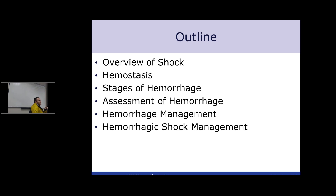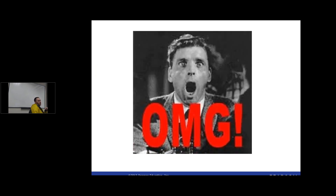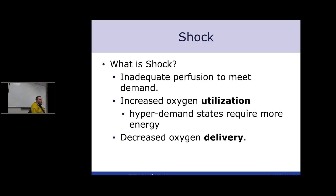This is what our outline looks like today. We're going to go through an overview, talk about hemostasis and the stages of hemostasis, hemorrhage and stages of hemorrhage along with assessment and management, and then shock — when blood loss becomes shock and what that means. In trauma situations, there are many different types of shock and we'll go through the main points to help differentiate the ones we really want you to understand.